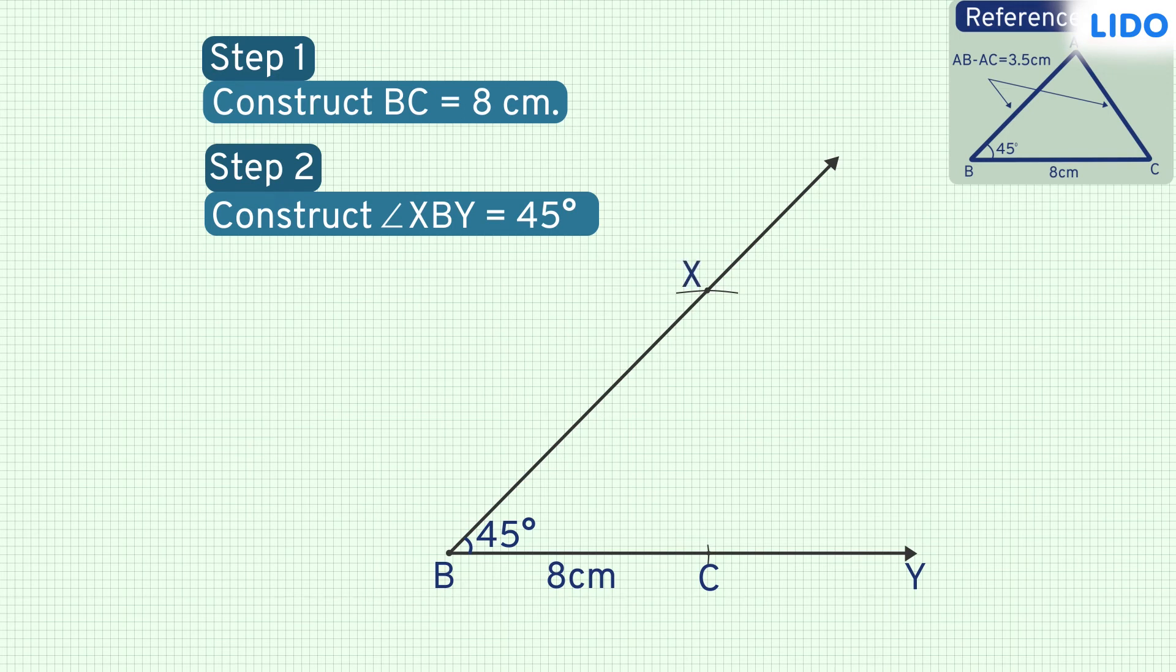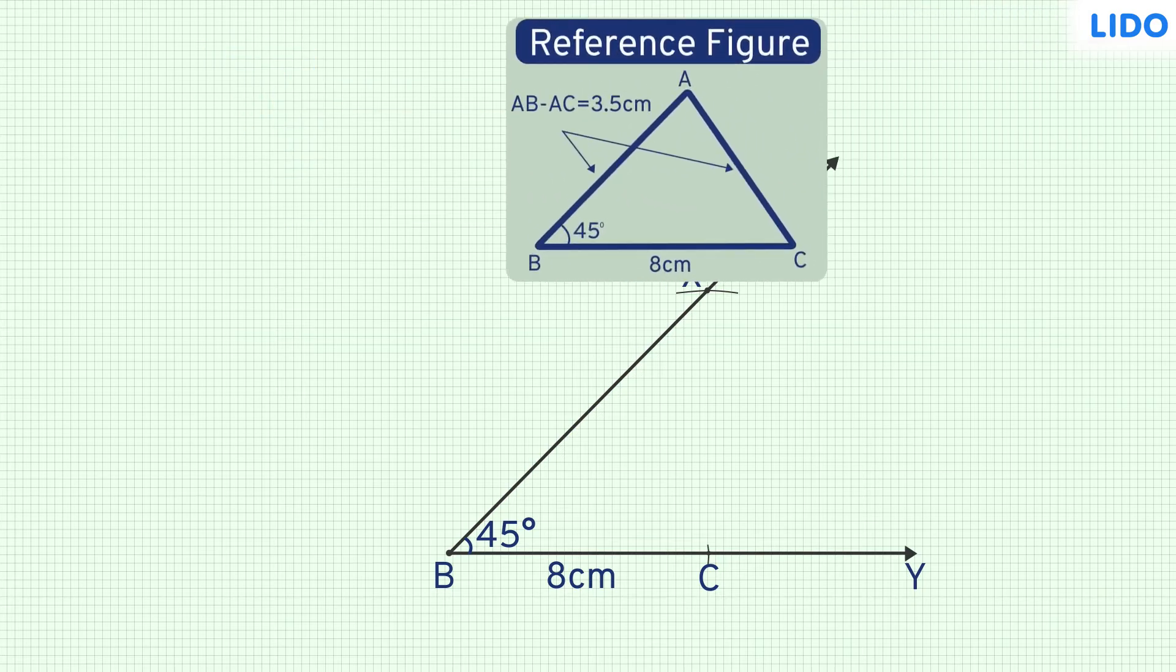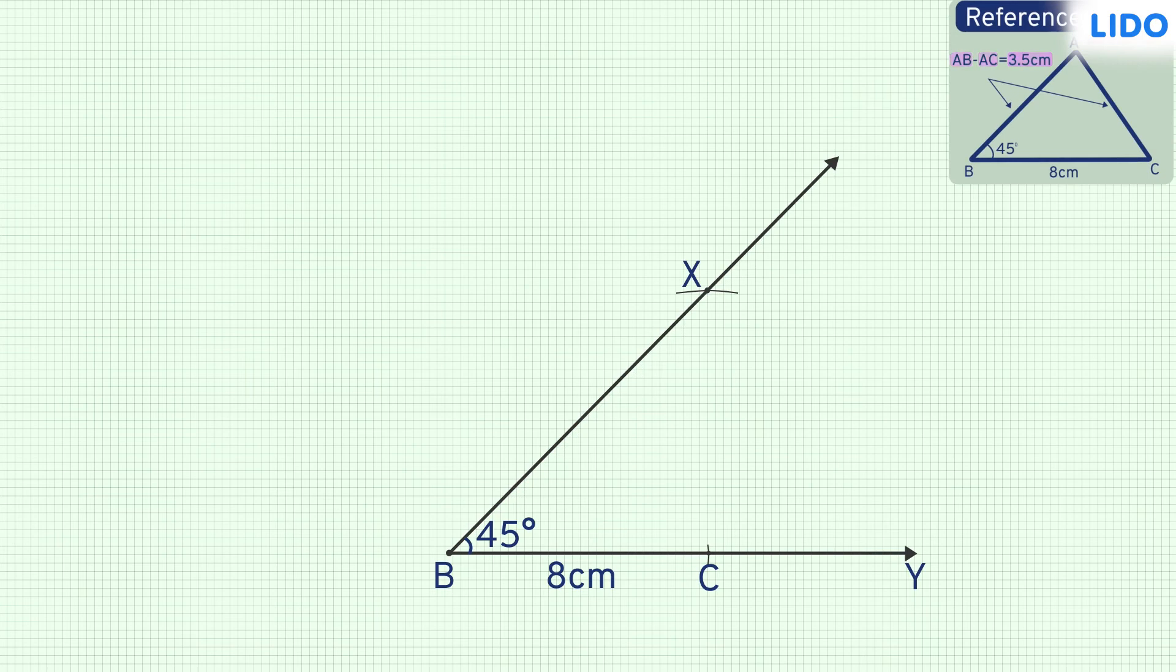Now, the only missing element is A. Let's take a closer look at the given information. We know that AB minus AC is 3.5 cm. That means AB is greater than AC.